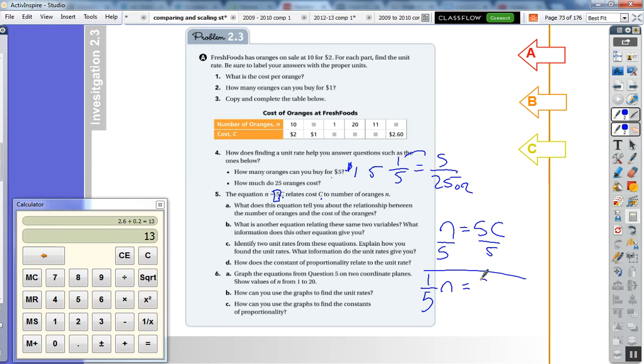And so that means you get, you're multiplying the number of oranges times one fifth is equal to your cost.